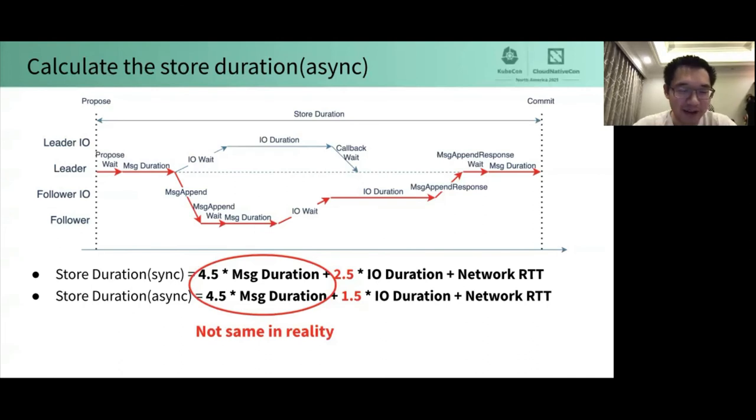However, in reality, the message duration is not the same in the synchronous version and asynchronous version. There is an optimization called command batch in store threads. Command batch will batch as many proposals as possible into one. In the case of the same total number of requests, the smaller number of proposals, the smaller the CPU overhead of store threads and GRPC threads. That's because of some internal implementation problems raised by many proposals and Raft messages. We are trying to optimize them to mitigate the impact, but in my opinion, it can't be totally eliminated.